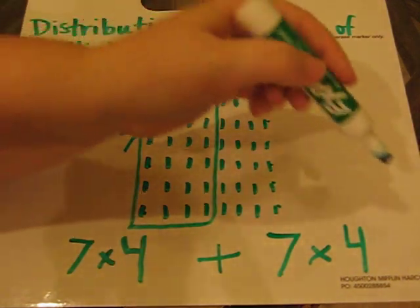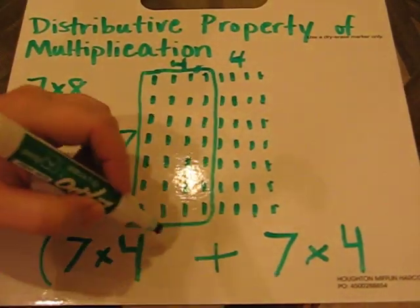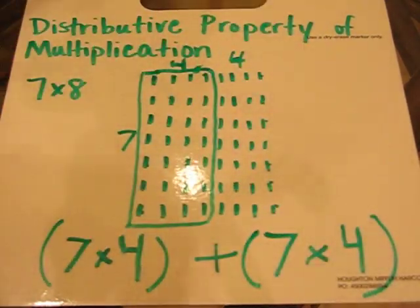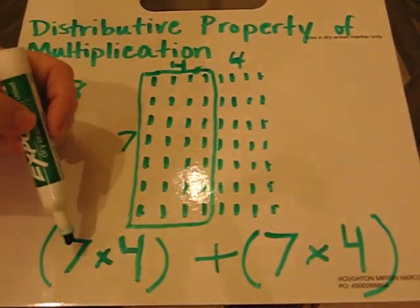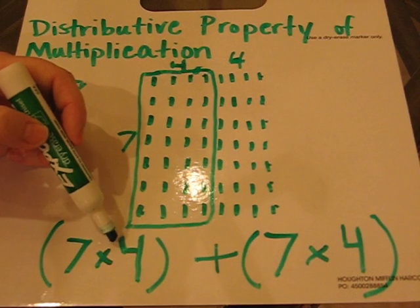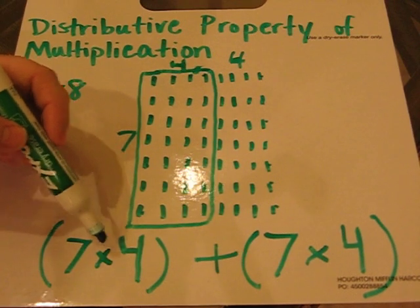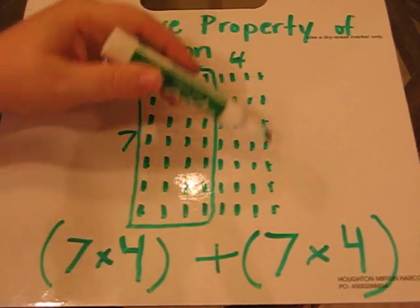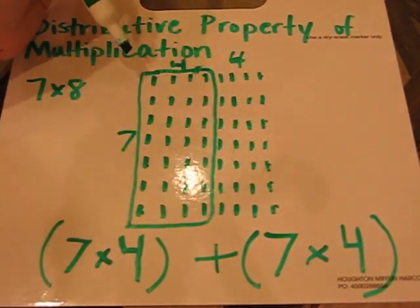So really, the easiest way to look at this is if you put parentheses. This is one group in the parentheses and this is another group in the parentheses. So if I find the answer to 7 times 4 and 7 times 4 and I add those two together, I would find out how many dots I have all together here.